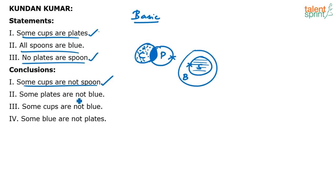Now look at number two: some plates are not blue. Again, if I look at the basic diagram, some plates are not blue appears true — I can choose some plates and say these plates are not blue. But the question is: will it always be true? No, it will not always be true. If a conclusion follows the basic diagram, don't mark it as true — check the other diagrams also, and when we draw the diagram in another way, it comes out to be false.